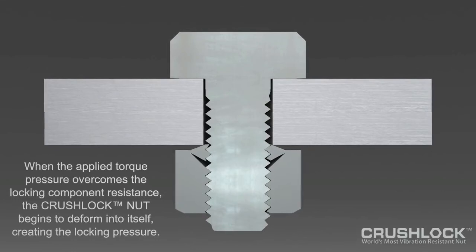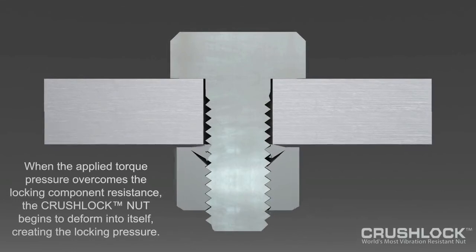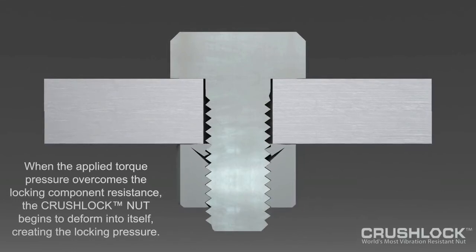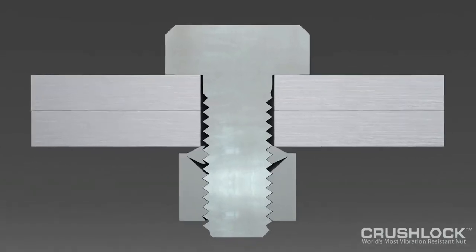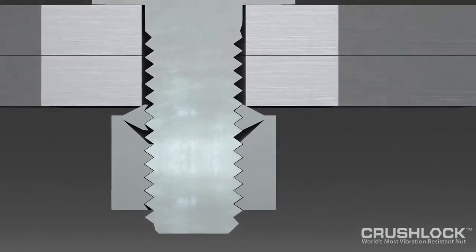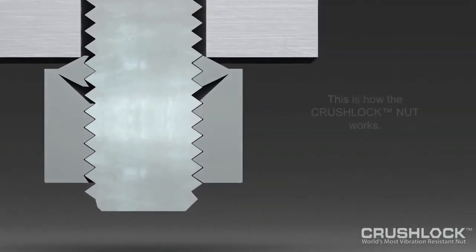the permanent nut must be destroyed to be removed. It is physically impossible for a Crushlock Permanent Nut to vibrate loose. The key to designing a nut that holds over 500% torque of a conventional nut is the understanding that